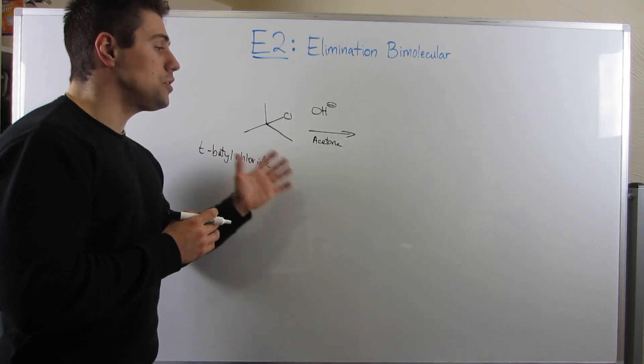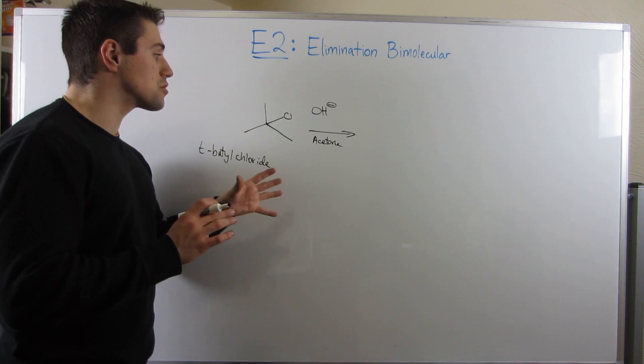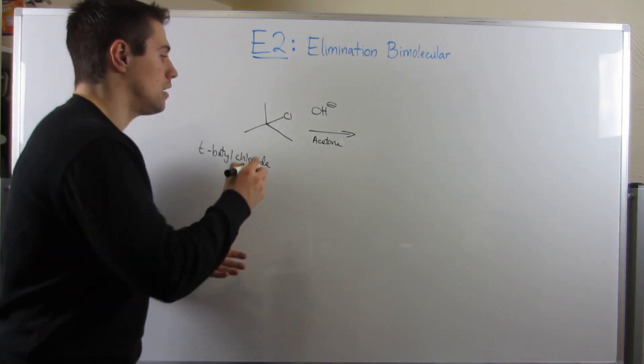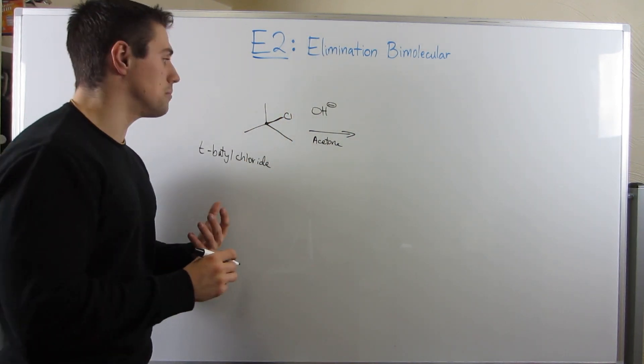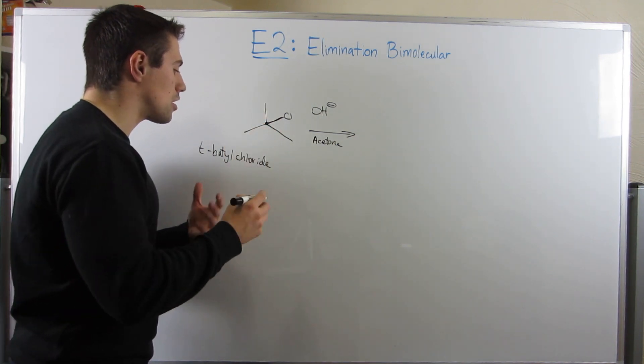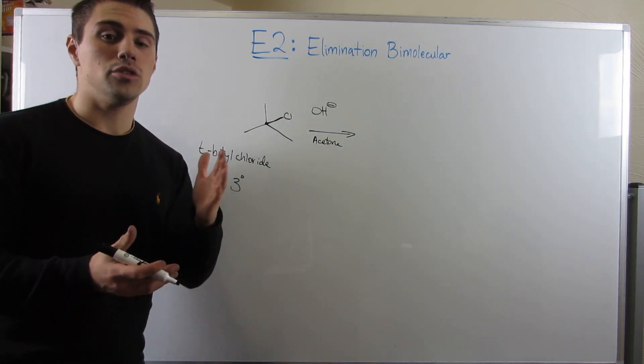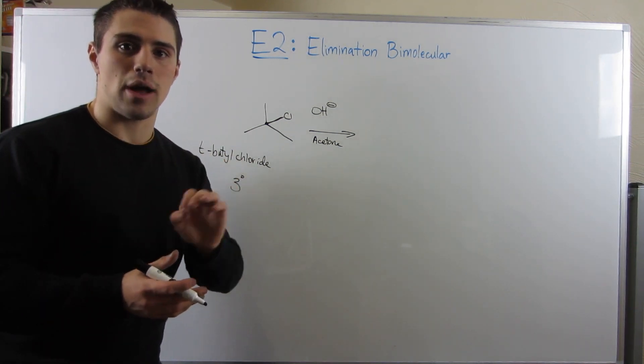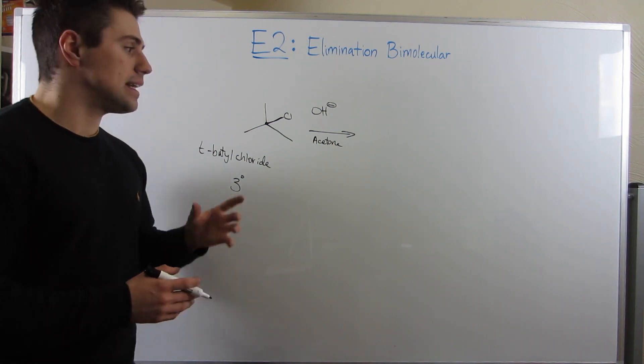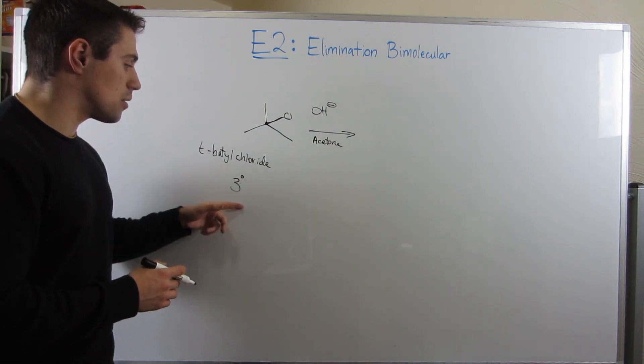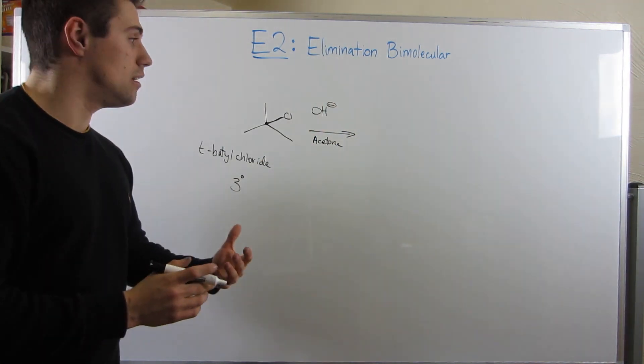Could this be an SN2 reaction? The answer is a hard no, because we first look for what kind of substrate we have as far as degree. If we look at this carbon attached to the leaving group, we're one, two, three - a tertiary substrate. Sterically, that is awful. When you have a tertiary substrate, you have zero SN2 reaction occur. When you're primary or methyl, SN2 dominates. However, when you have a tertiary substrate that's very sterically encumbered, you have elimination occur instead.